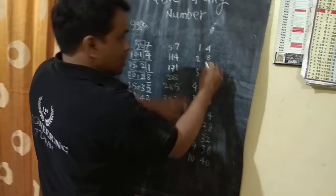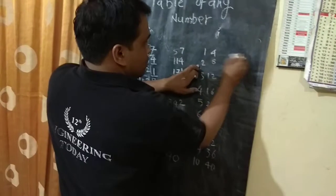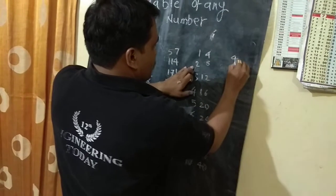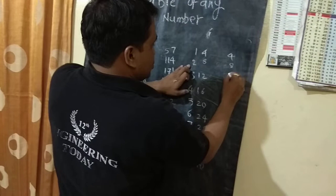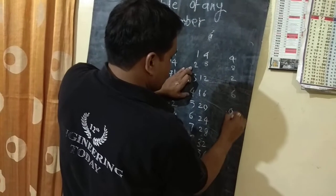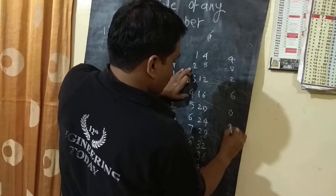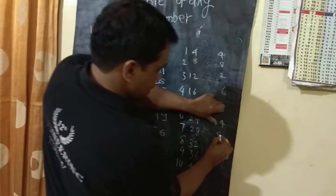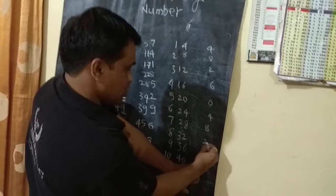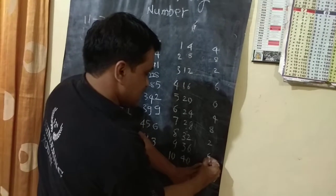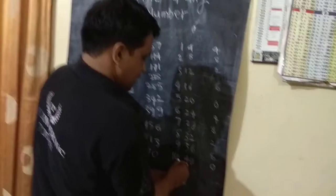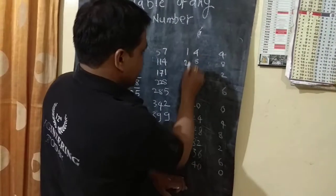And what you have to write is the unit place. So the unit place digits are: 4, 8, 2, 6, 0, 4, 8, 2, 6, and 0. Then add the remaining number.